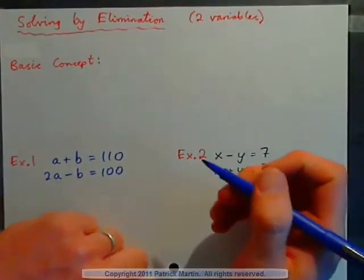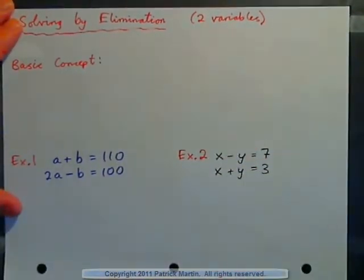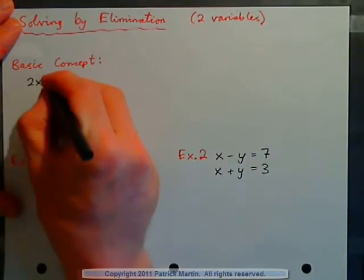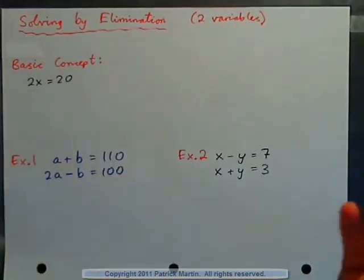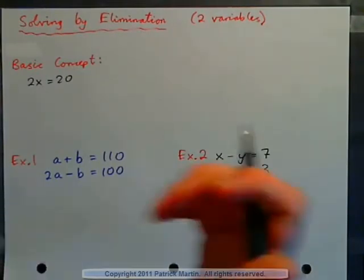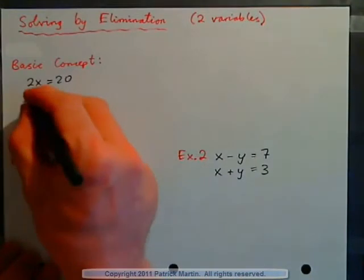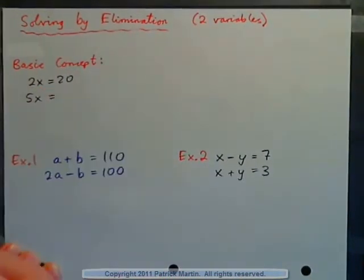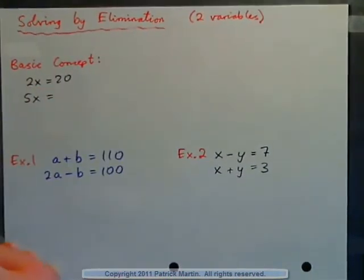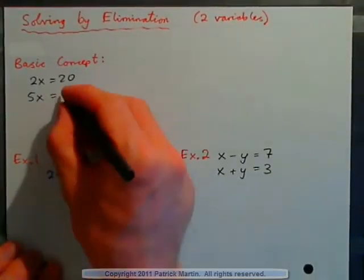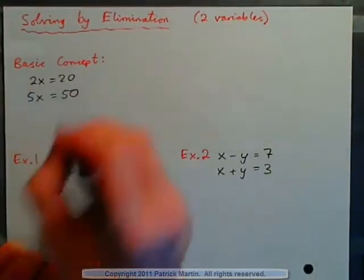Here's how it goes. If you had one equation that said 2x equals 20, what is the value of x? 2 times some number is 20, so x has to be 10. What would 5x be equal to? If x was 10, then 5x would be 5 times 10, which is 50.